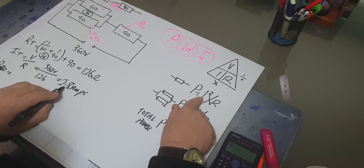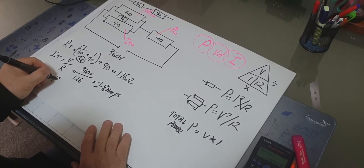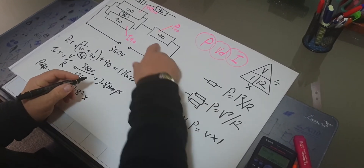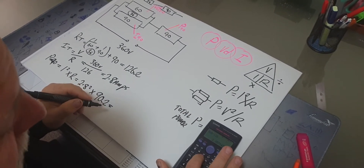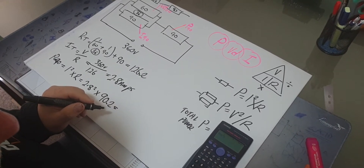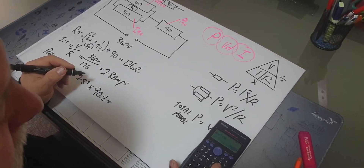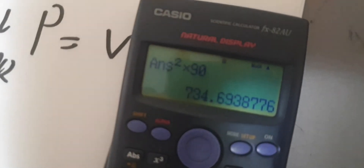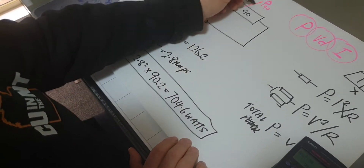The current flowing through the 90-ohm series resistor is the full 2.8 amps. Using P equals I squared times R: 2.8 squared times 90. On the calculator, enter 2.8, press the square button, multiply by 90, press equals — and we get 704.6 watts. Remember: power is in watts, not amps or ohms.